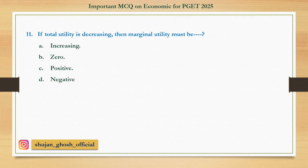Question number eleven: If total utility is decreasing, then marginal utility must be — option A: increasing; B: zero; C: positive; D: negative. Answer: negative.